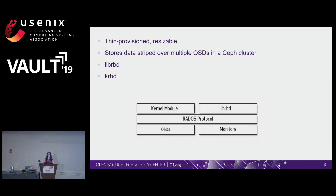RBD images are thin-provisioned, resizable images. They store data by striping them across multiple OSDs in a Ceph cluster. It offers two libraries: one is the user-space library known as libRBD, which is typically used in virtual machines, and the other is the kernel module, which is used in container and bare-metal environments.